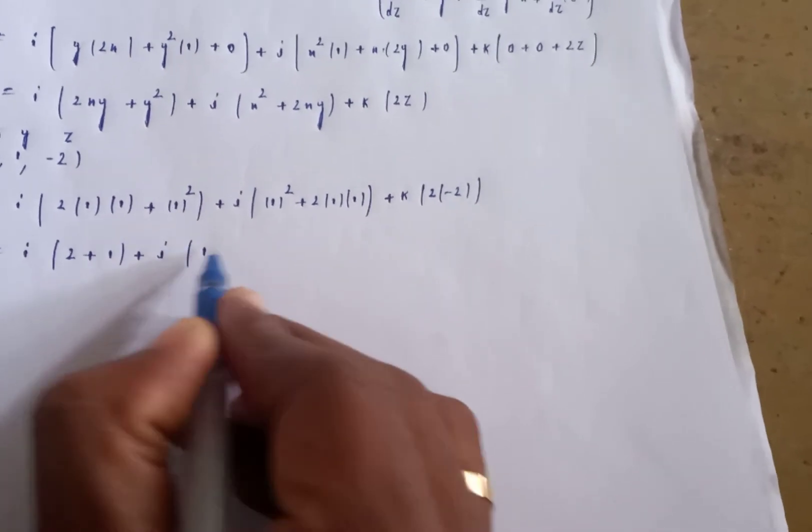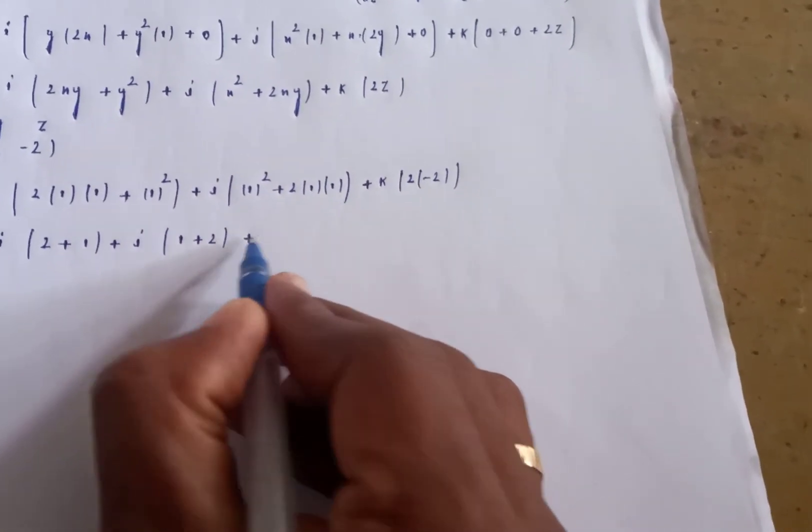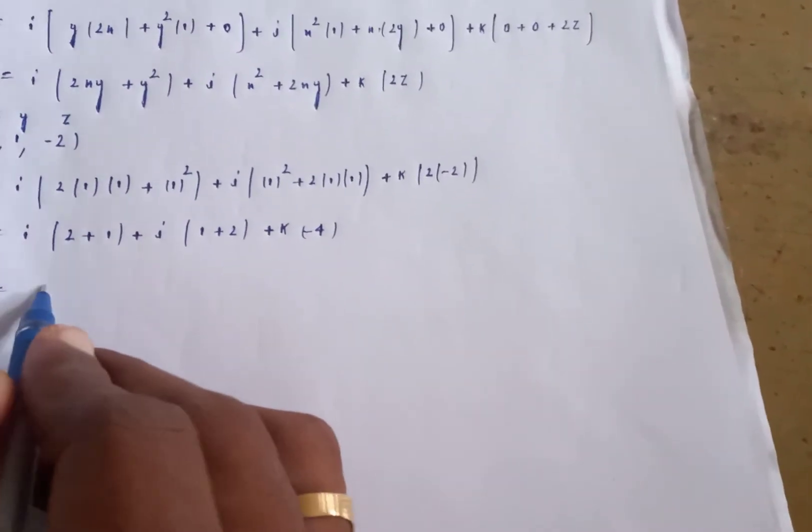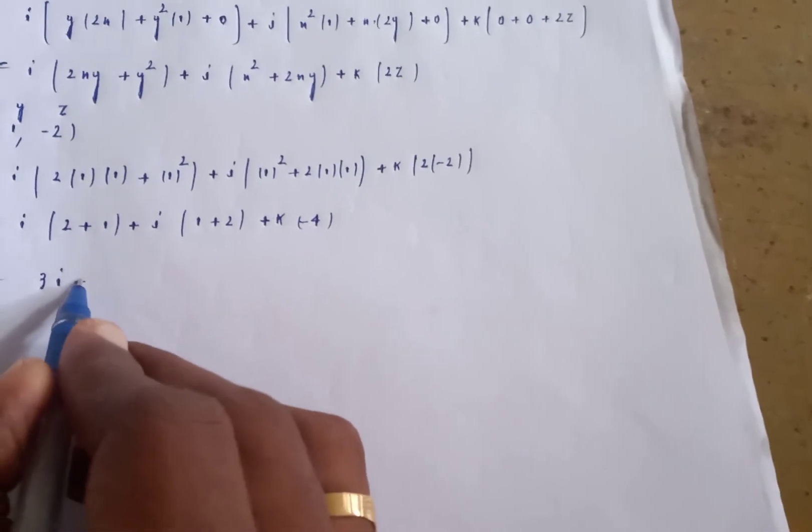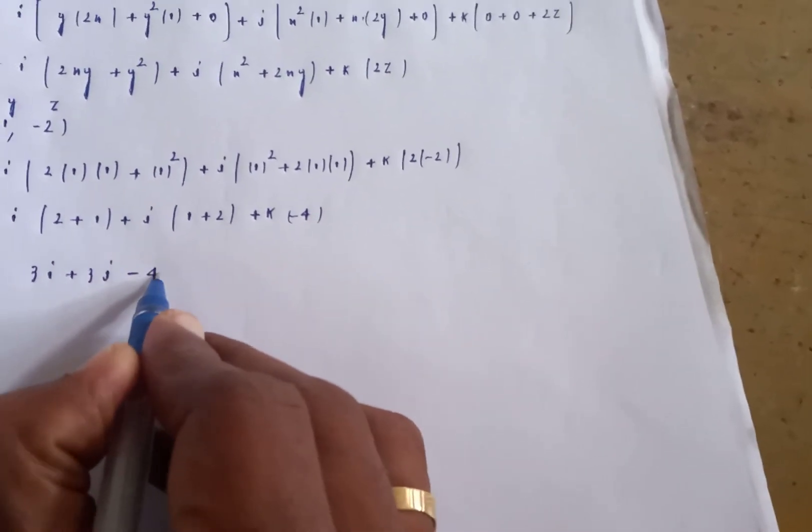Equals i times (2 + 1) plus j times (1 + 2) plus k times (-4). That's 3i + 3j - 4k.